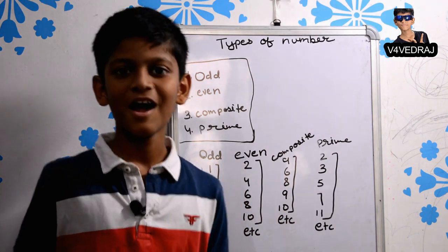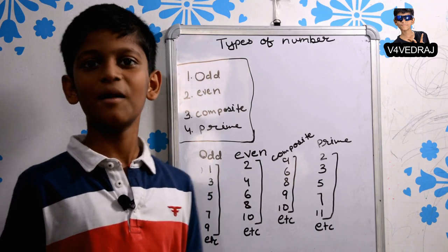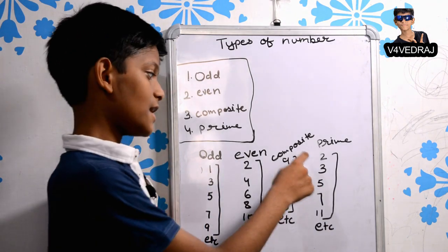Composite numbers which has more than 2 factors is called composite number.